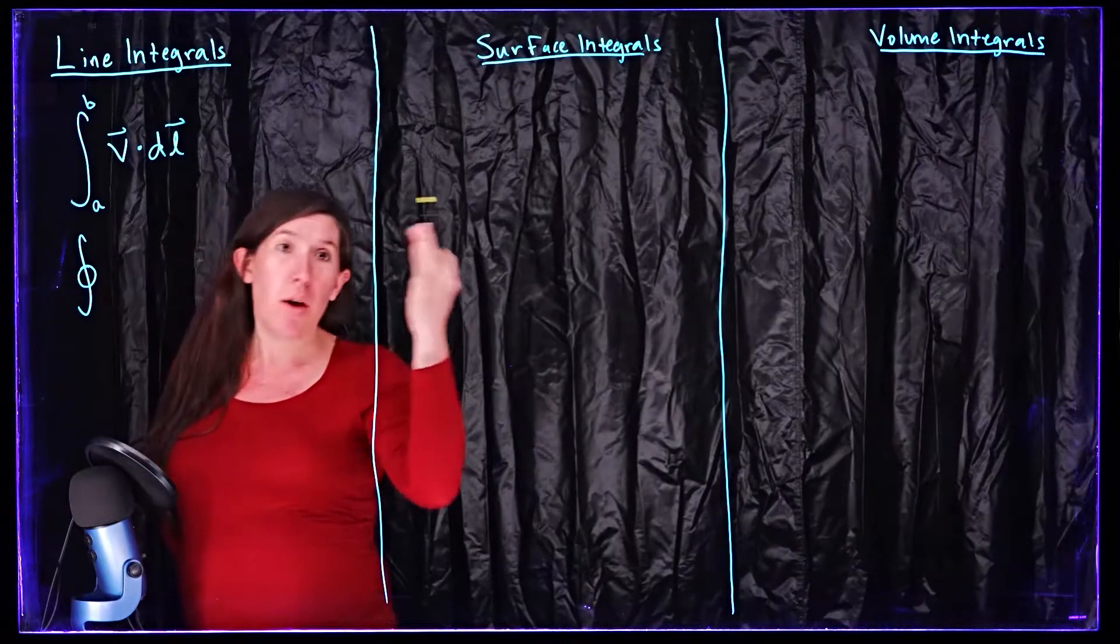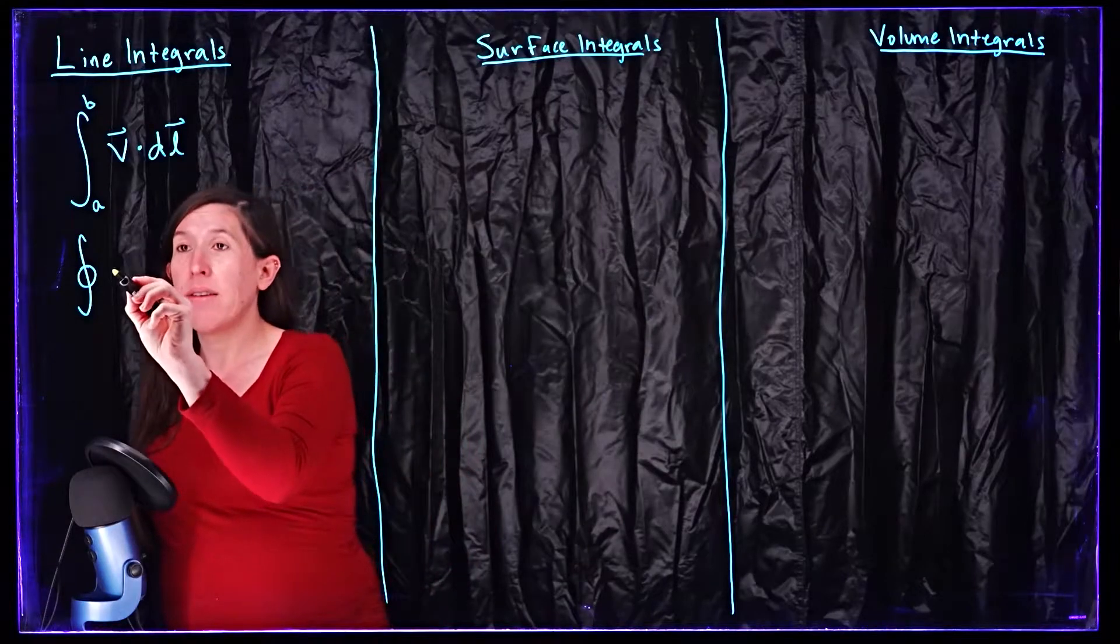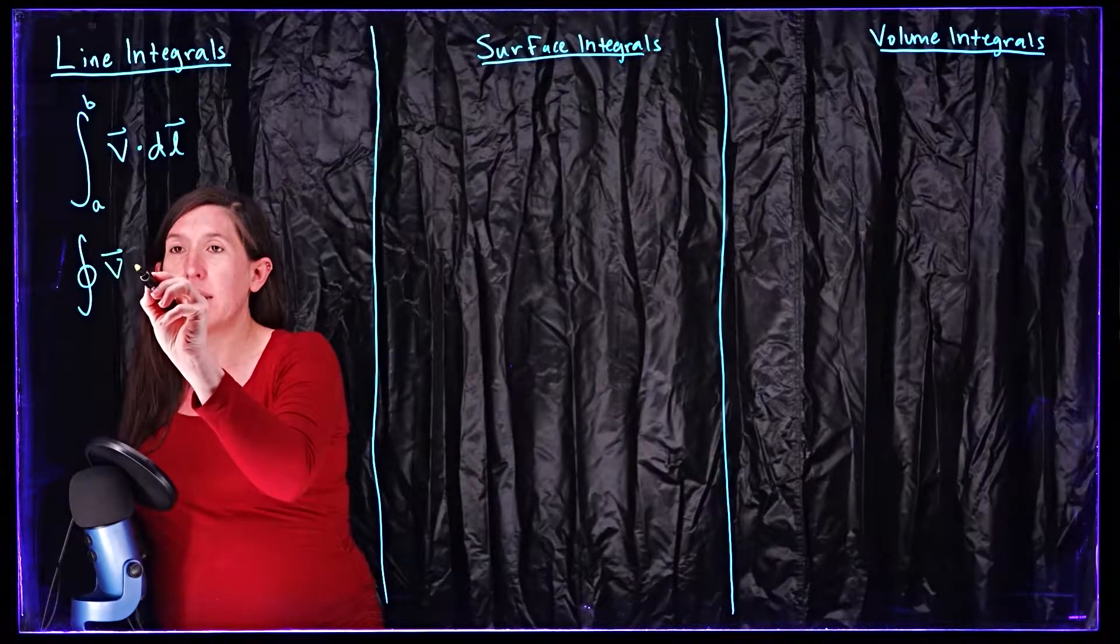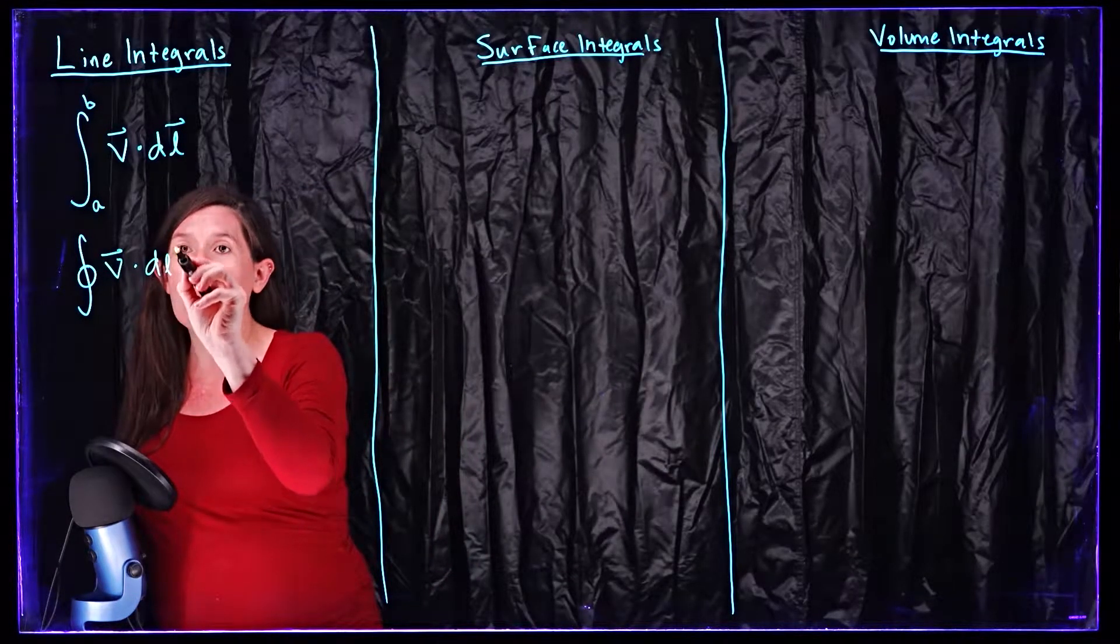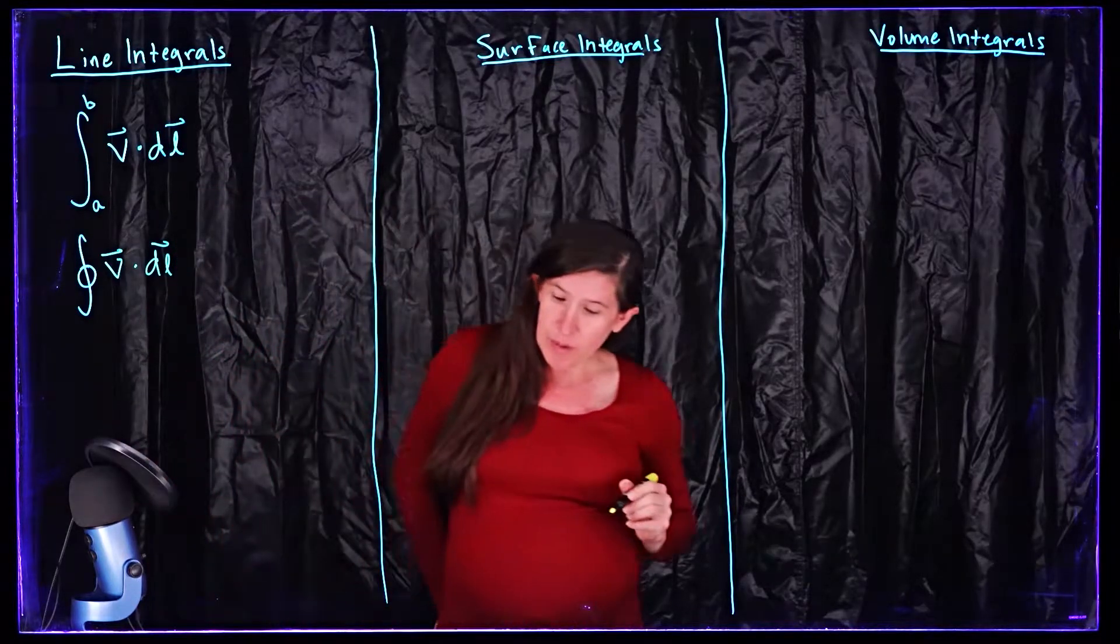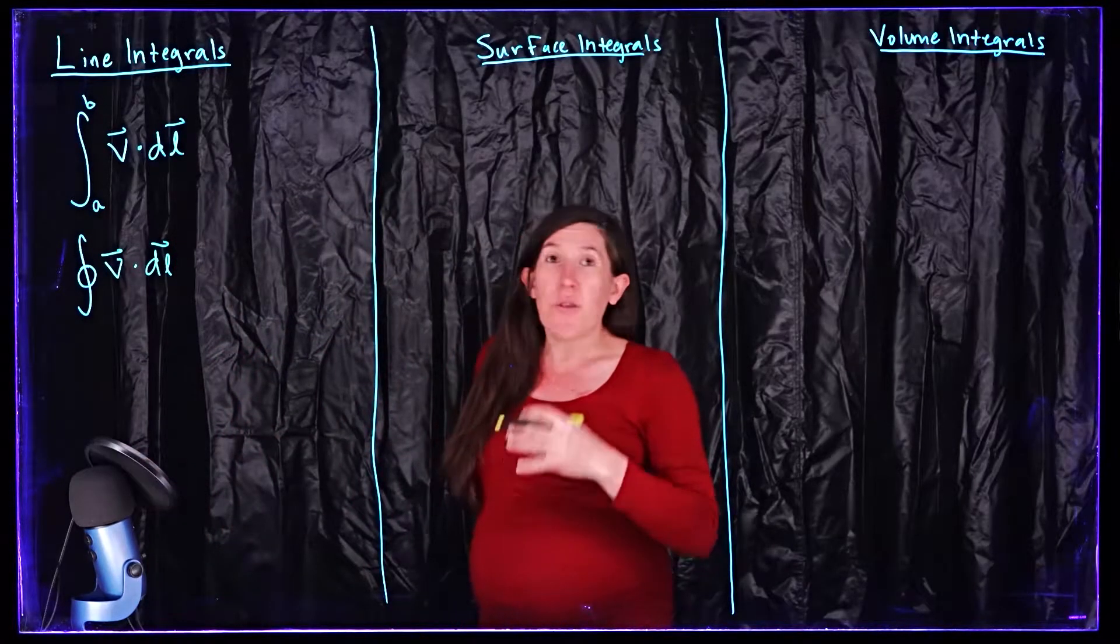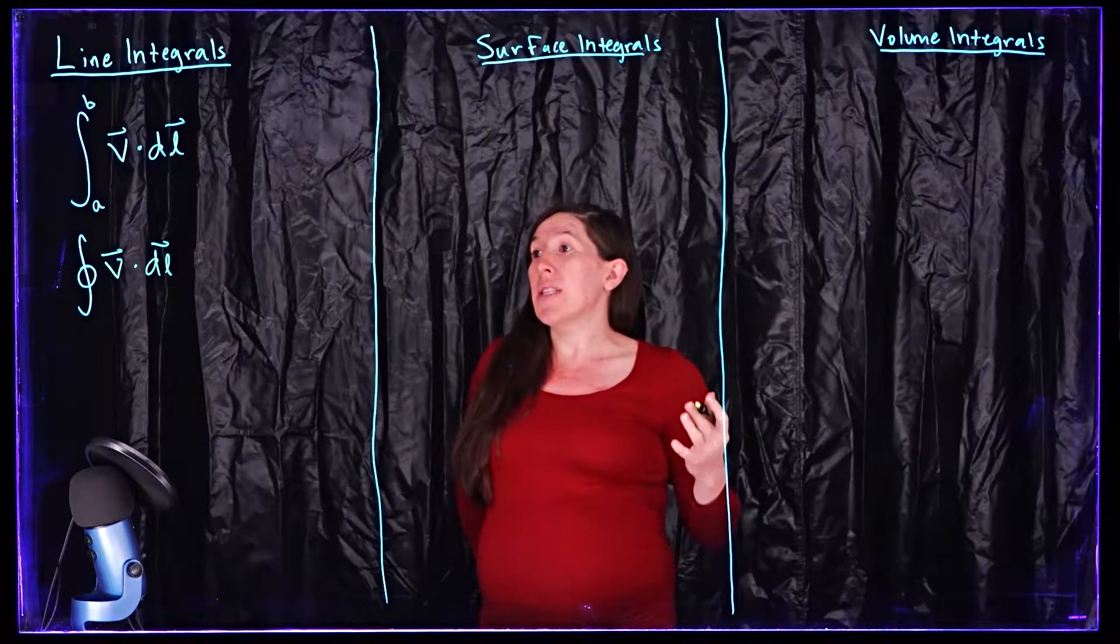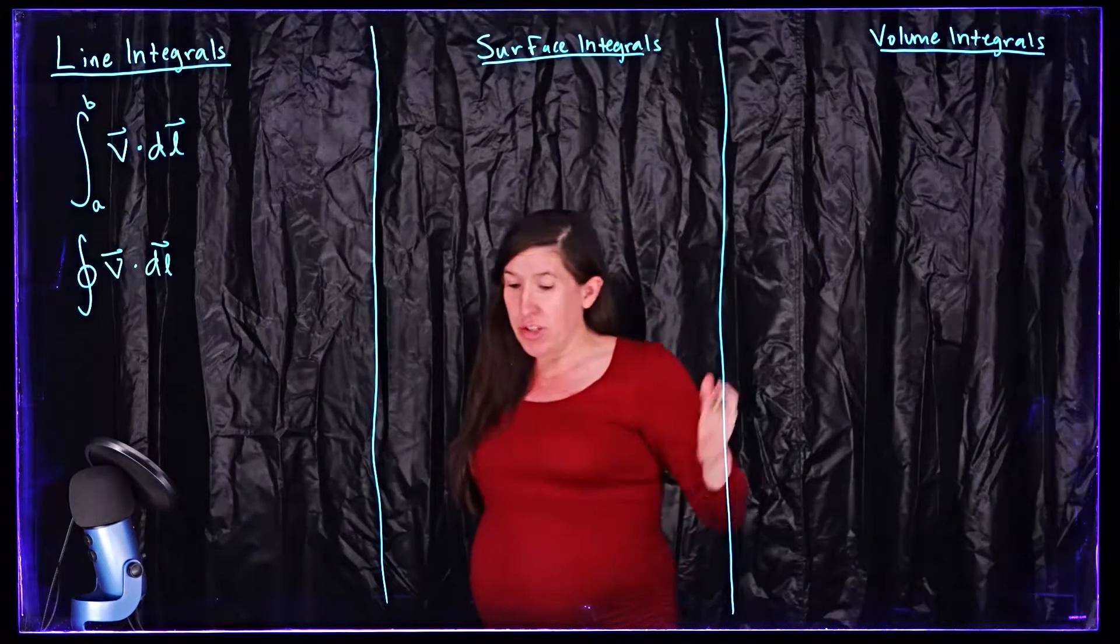So here you can imagine we're going from like point a back to point a and this is how we would denote that to remind us that it's a closed loop. And of course generally speaking you're going to need to specify what path you're taking.